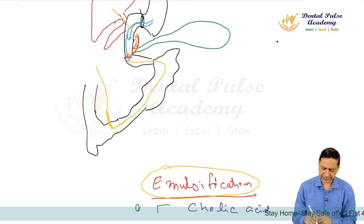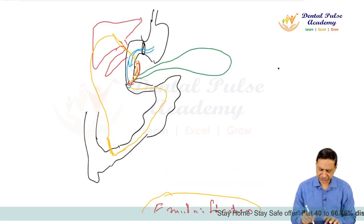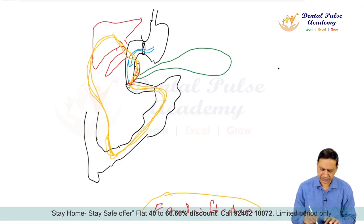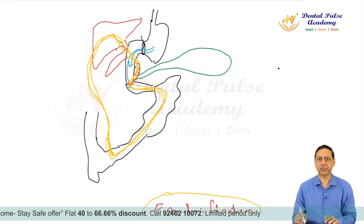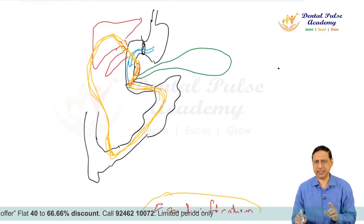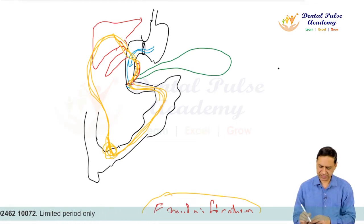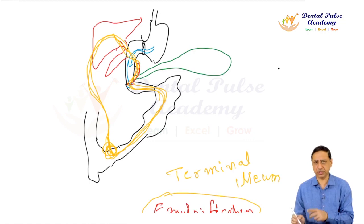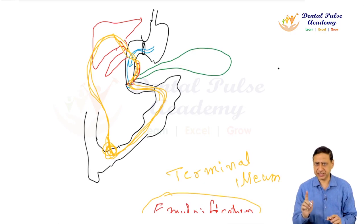Bile acids are reabsorbed from the terminal ileum. They go back to the liver, are secreted again into the small intestine, reabsorbed again — this is the enterohepatic circulation of bile salts. Bile salts are maximally absorbed from the terminal ileum — not the proximal ileum, not the jejunum.